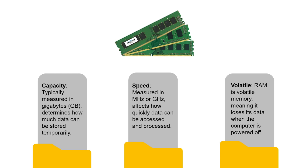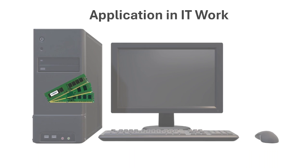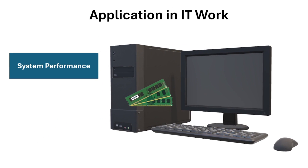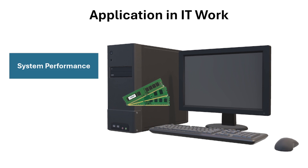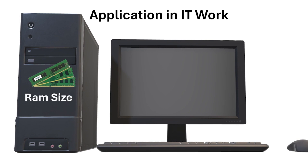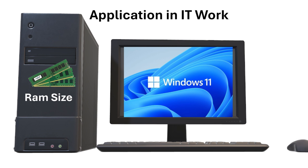So let's review — what kind of data does the RAM store? This would be the operating system, open documents and files, and other programs running. Let's move on to how IT professionals deal with RAM at work. RAM size and speed directly impact system performance. IT professionals should ensure adequate RAM for servers, workstations, and applications to prevent bottlenecks and improve responsiveness. For example, when IT needs to install an operating system, we should know the minimum RAM required — like Windows 11, which requires a minimum of 4 gigabytes.